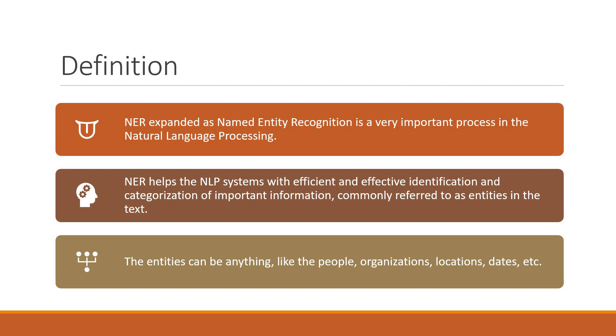So you and I can be an entity. Locations like Newark and Delhi can be entities, and dates like 15th August can also be an entity. All these are simple examples that can fall under the entity criteria.